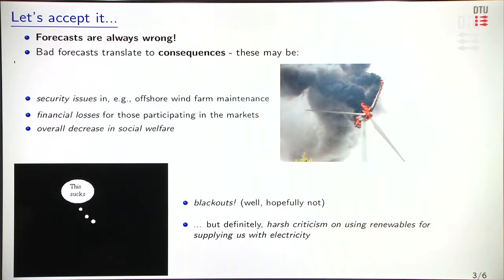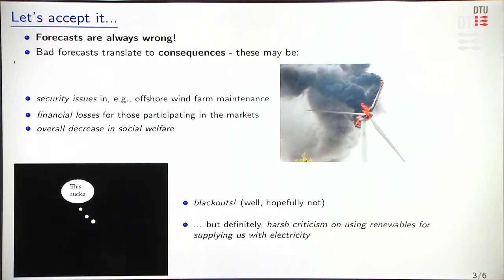There can also be financial losses. Participation in electricity markets relies on forecasts and how we accommodate them in the decision-making process. So wrong forecasts and wrong appreciation of forecast quality will lead to financial losses. And eventually, as forecast errors may translate to cost consequences, there may be an overall decrease in social welfare. If you were to push it, you could say that large errors in wind, solar, etc. forecasts may lead to blackouts, as we cannot cope with this kind of situation. Hopefully not, since there are many ways to prevent blackouts and the last blackout was a long time ago in Denmark. But still, we have harsh criticism on using renewables because of the quality of the forecast, the extra costs, and some extra emissions if we have to use dirty power plants as balancing generation.